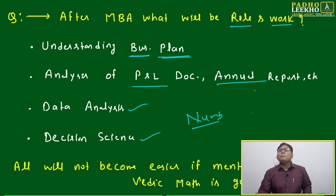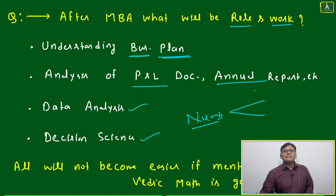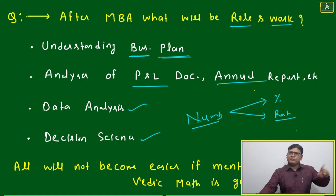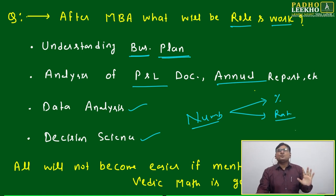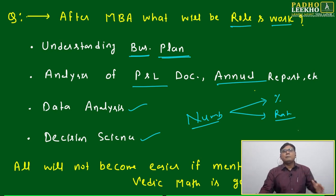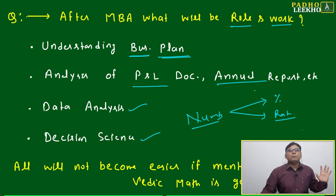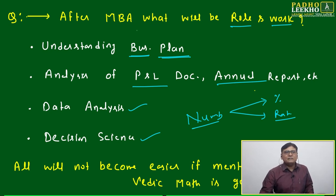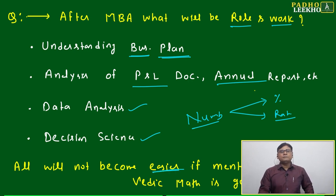Those numbers will be represented in two formats: one is percentage, one is ratio. Profitability, profit percentage — everything is a ratio. What is the percentage growth with respect to last quarter? What will be our projection of growth for next year? Everything is percentage or ratio. That means you are going to play with numbers. If you are good in Vedic math, your life will become easier.